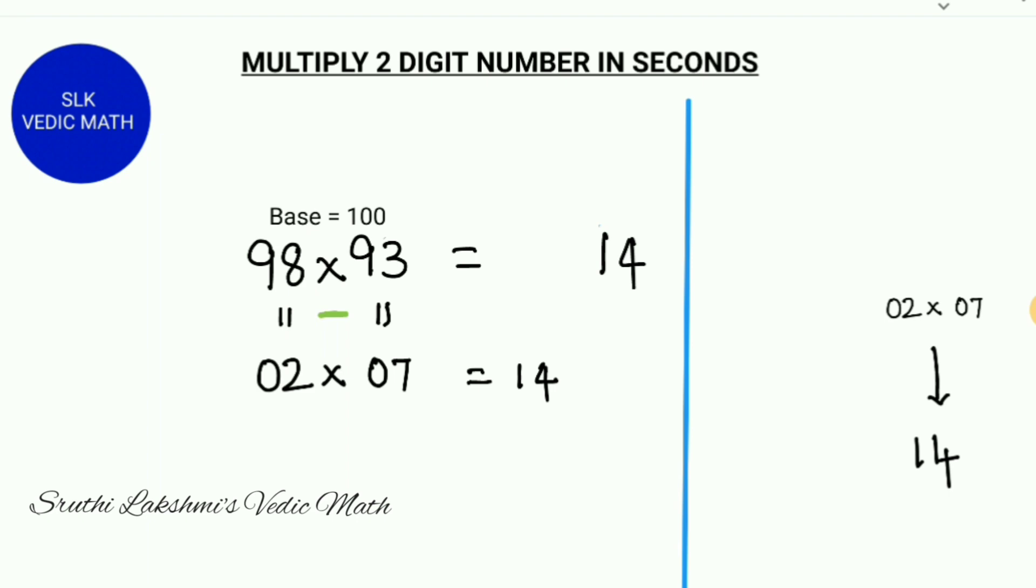Now to find the first two digits of our answer, we cross subtract. Meaning that we either do 98 minus 7 or 93 minus 2. They both give the same answer which is 91. So we write 91.